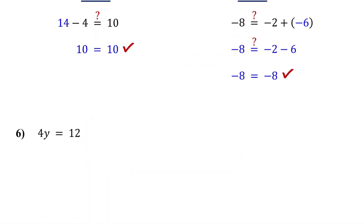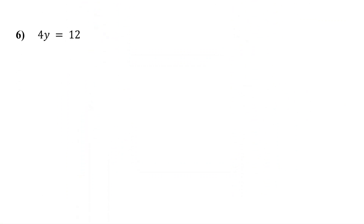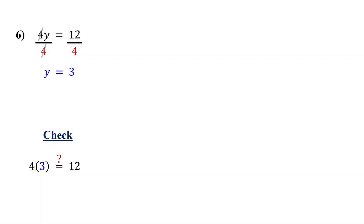Now, what if the variable is multiplied by a number? The goal is still the same: to isolate the variable using the opposite operation. Here, y is being multiplied by 4. To get y by itself, we do the opposite of multiplication — we divide by 4, and we divide both sides to keep the equation balanced. On the left, 4 divided by 4 is 1, so the 4s cancel out, leaving y by itself. On the right, 12 divided by 4 is 3. So the solution is y equals 3. Let's check: plug in 3 for y. 4 times 3 is 12, and that matches the right side. So our solution is correct.